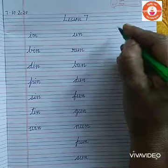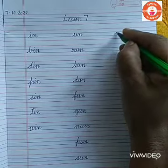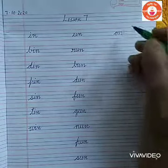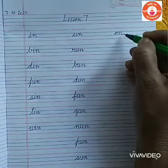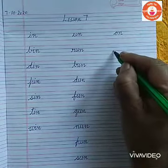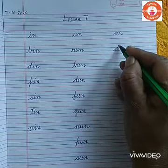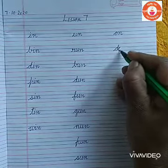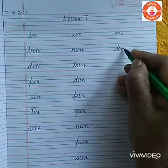Now we will write a word with 'on'. O, N: On. D, O, N: Don.